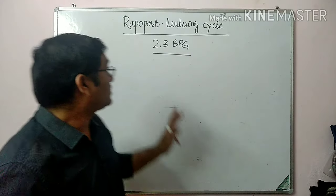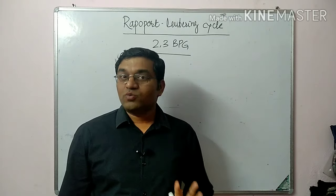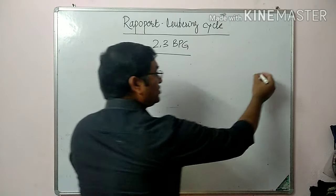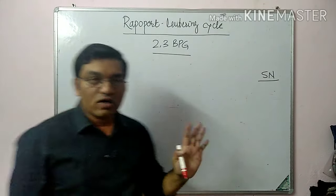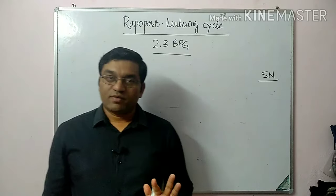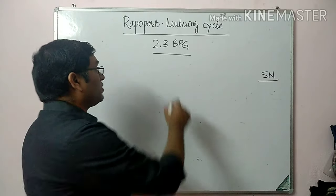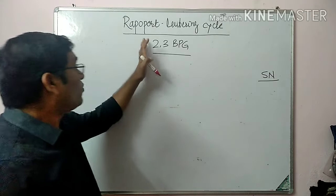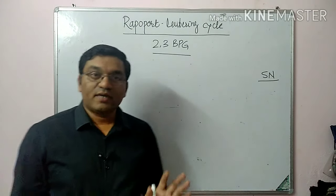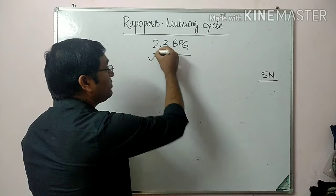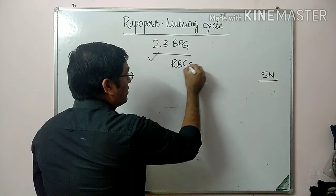Hello friends. Today's topic of discussion is the Rapoport-Luebering cycle and the importance of 2,3-bisphosphoglycerate. You may get a short note on this topic or it may be part of a long answer question in your university examination. This cycle was first described and this compound was isolated by Rapoport and Luebering. It is a supplementary pathway for generation of 2,3-bisphosphoglycerate in erythrocytes, in RBCs.